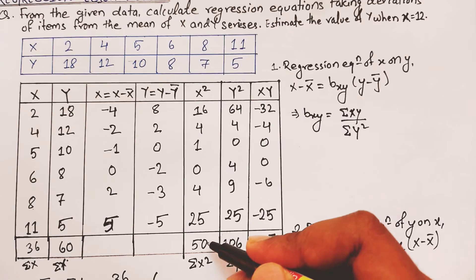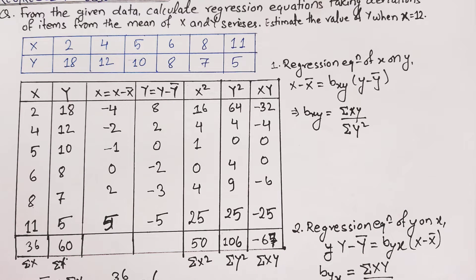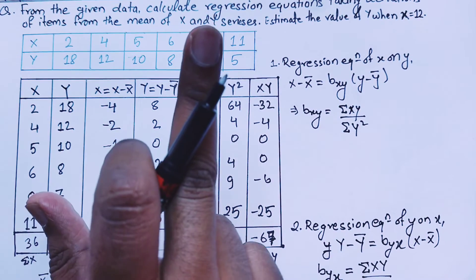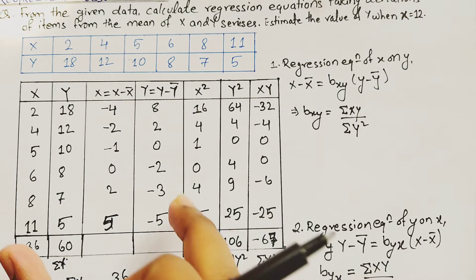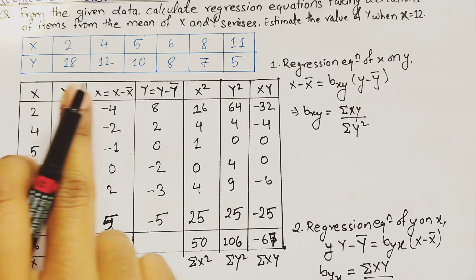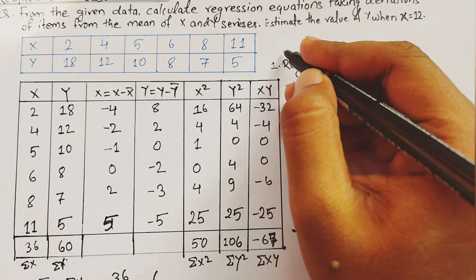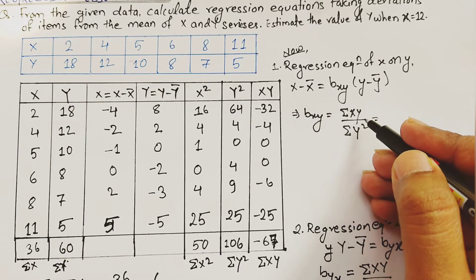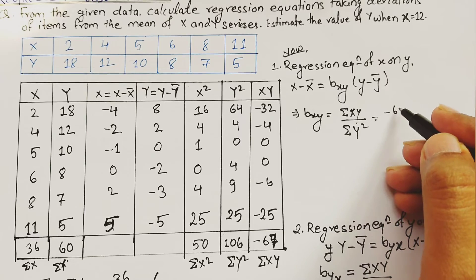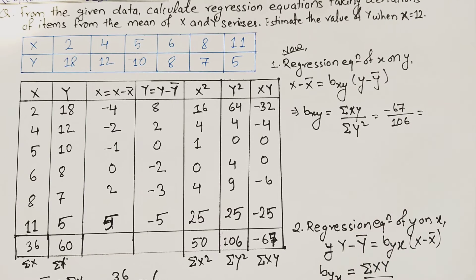Summing the columns: Σx² = 50, Σy² = 106, Σxy = −67. In the exam, after drawing the table and computing these summations, we write the solution. Now we substitute these values into the regression equations. For the regression equation of x on y, b_xy = Σxy / Σy² = −67 / 106.